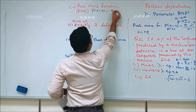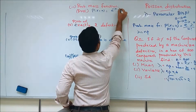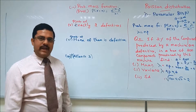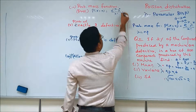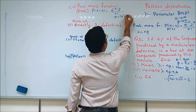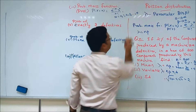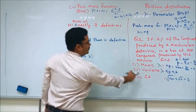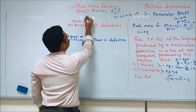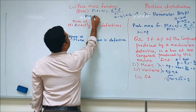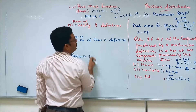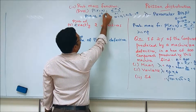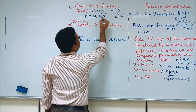The probability mass function for the Poisson distribution is given by e to the power minus lambda, times lambda power x, divided by x factorial, where x varies from 0, 1, 2, 3, and so on. Substituting the value of lambda = 4, we get P(x) = e to the power minus 4, times 4 power x, divided by x factorial.